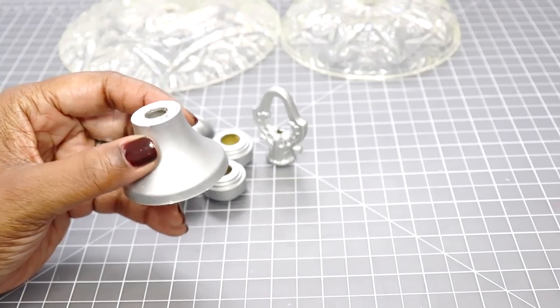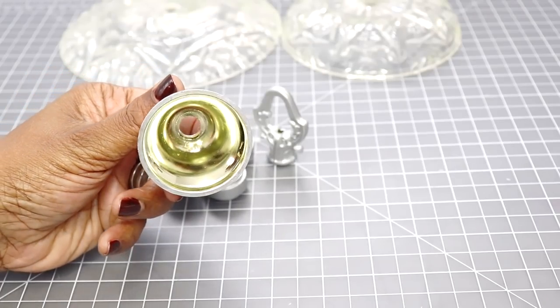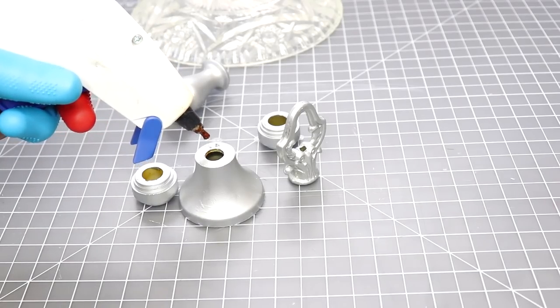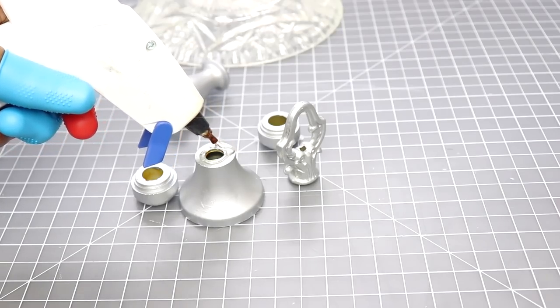So here are all the pieces, they've been painted twice and it's fully dry, and so now I'm going to start assembling my lamp. So I'm using a little hot glue just to start to assemble the inner portion of the lamp.